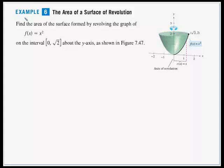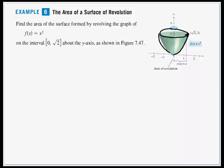Example 6: Find the area of the surface formed by revolving the graph of f(x) = x² on the interval from 0 to √2 about the y-axis. The x² function goes up from 0 to √2, and we rotate that arc around the y-axis, creating a bowl shape.